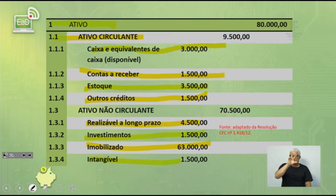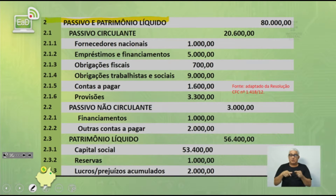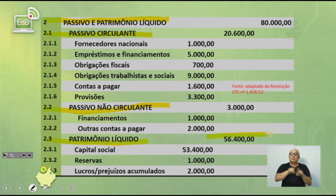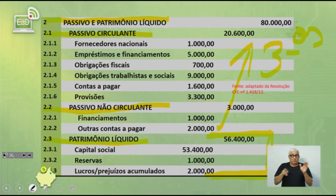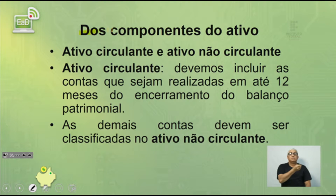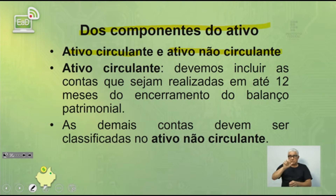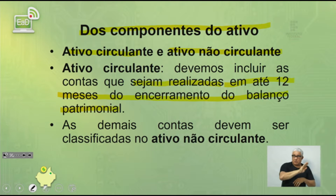Na outra parte, temos juntos o passivo e o patrimônio líquido: passivo circulante, não circulante, e o patrimônio líquido. Sempre lembrando que o patrimônio líquido é o que chamamos de capital próprio, e do patrimônio líquido para cima é o capital de terceiros. O ativo é dividido em ativo circulante — contas realizadas em até 12 meses do encerramento do balanço — e ativo não circulante, que abrange todas as demais contas.